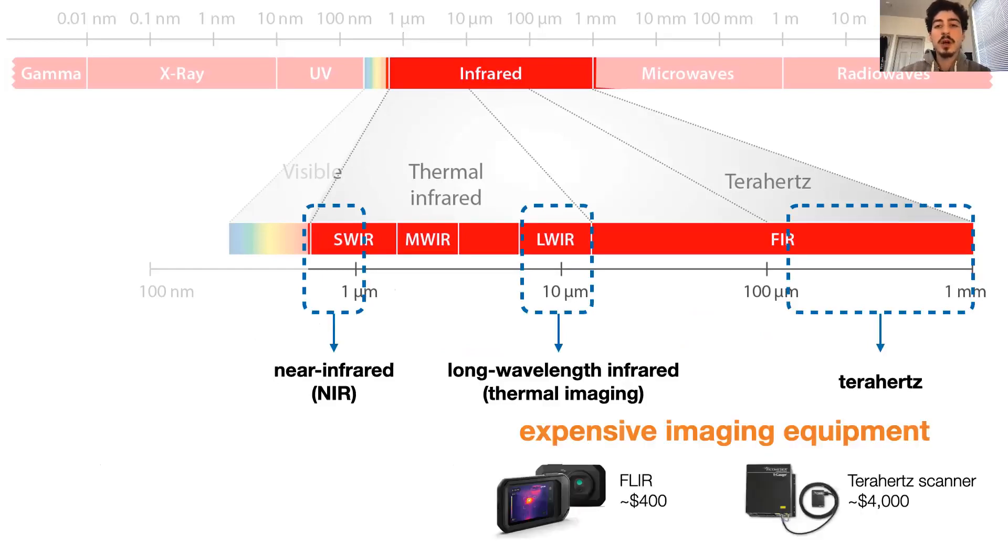If you want to image objects in long wavelength infrared or terahertz, that is going to be pricey. As you see in these examples, the longer the wavelength, the more expensive is the imaging equipment. However, near-infrared cameras are much more affordable, so they are particularly suitable for our purpose. In this project, we use a $20 NIR camera by Raspberry Pi.